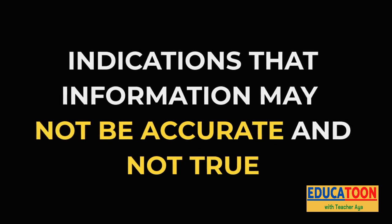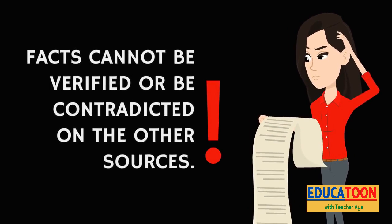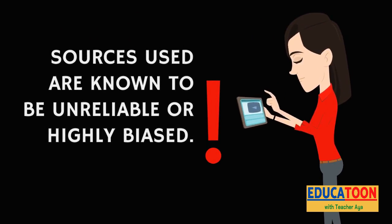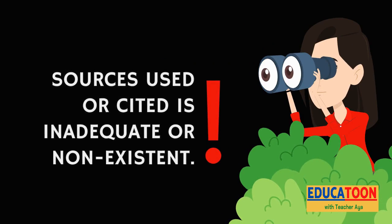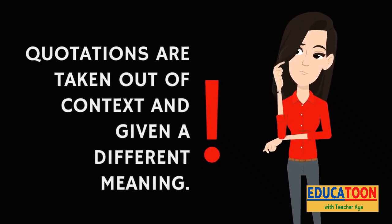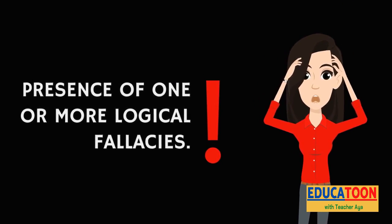Here are some indications that information may not be accurate and true. Number 1: Facts cannot be verified or are contradicted by other sources. Number 2: Sources used are known to be unreliable or highly biased. Number 3: Sources used or cited are inadequate or non-existent. Number 4: Quotations are taken out of context and given a different meaning. Number 5: Presence of one or more logical fallacies.